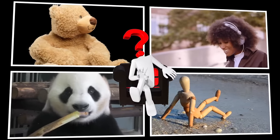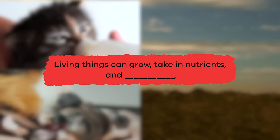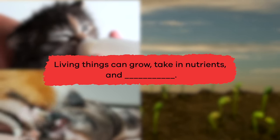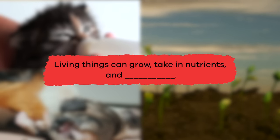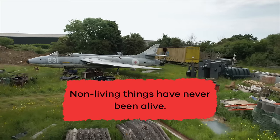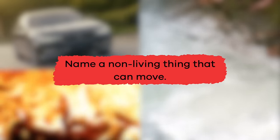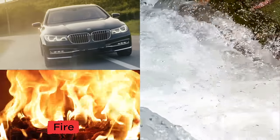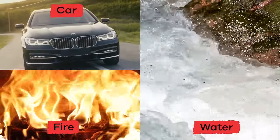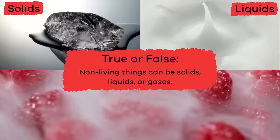Now that you are an expert on living and non-living things, let's review. Fill in the blank: living things can grow, take in nutrients, and blank. Did you say reproduce? True or false: once a living thing dies, it becomes a non-living thing. False — non-living things have never been alive. Name a non-living thing that can move. Fire, water, or a car. True or false: non-living things can be solids, liquids, or gases. That's true!